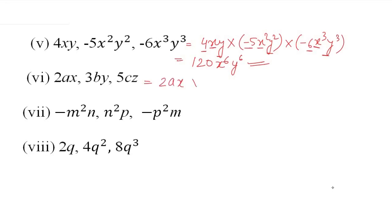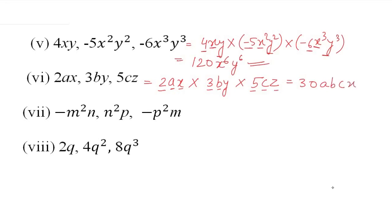Variable multiplication example: 2a × 3b × 5c × x × y × z. Numbers: 2 × 3 = 6, 6 × 5 = 30. सारे variables different हैं हर case में, तो answer होगा 30abcxyz.